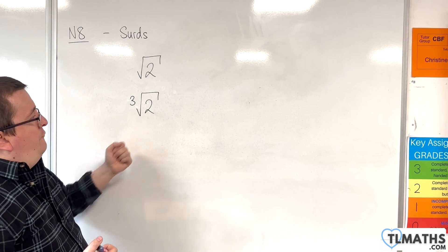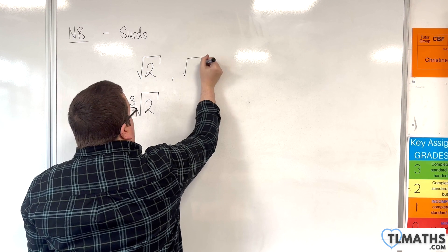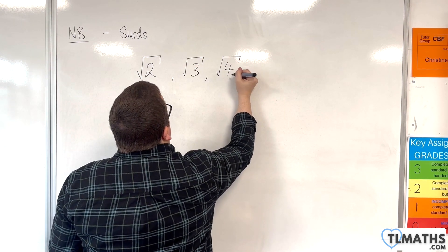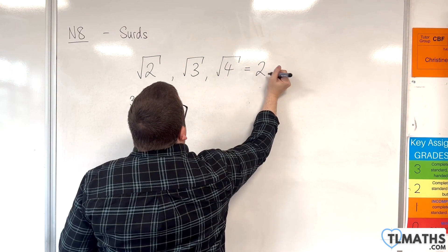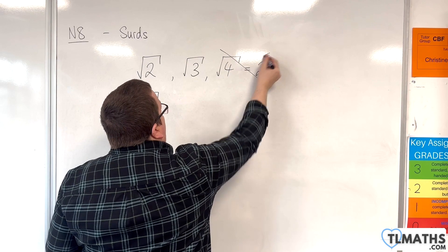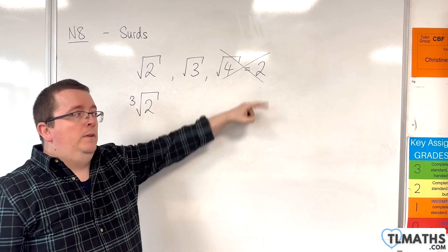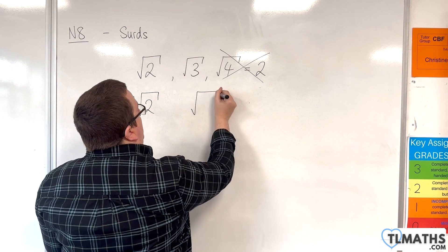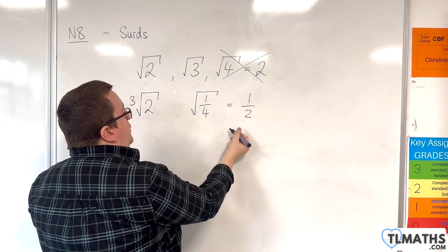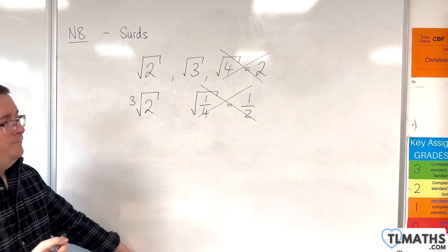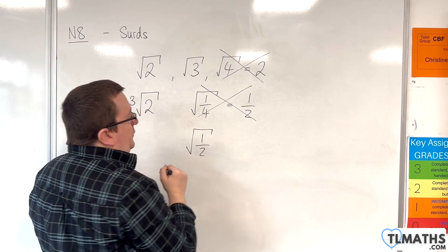But not every number that I write underneath the square root is a third. Root three, that is a third. Root four however is not a third, and the reason for that is because that is two. Square root of four is two, so this is not a third because I can remove the square root and simplify it down to two. Likewise, I could have the square root of a quarter. This is a half. The square root of one half is a third.